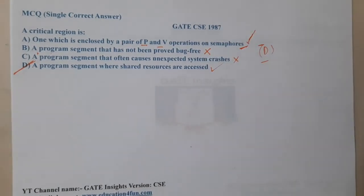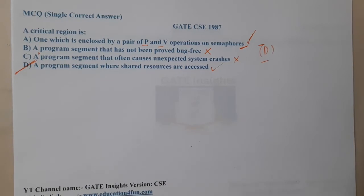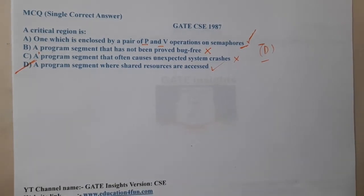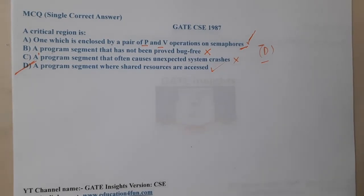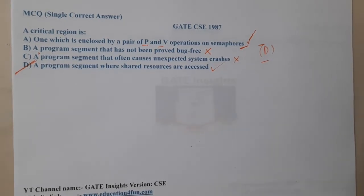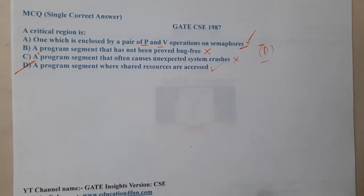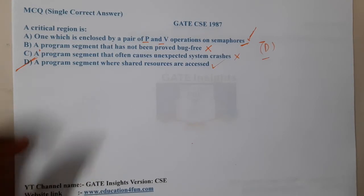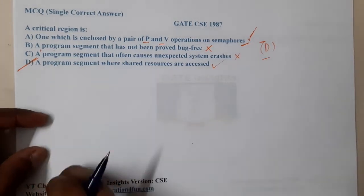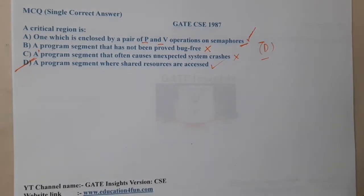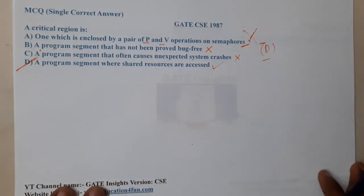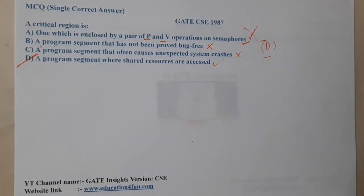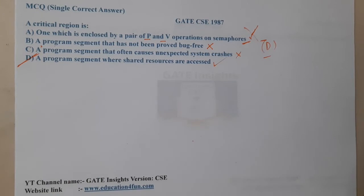There is a small flaw in option A. The statement looks good, but the issue is: by saying 'one which is enclosed by a pair of P and V operations,' they are indirectly saying that the critical section problem is solved only using semaphores. Any critical section you take will be enclosed between P and V — they are implying that directly. So with that understanding, option A is also wrong.